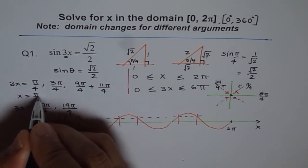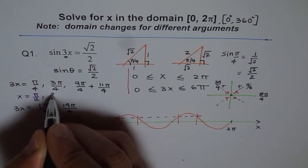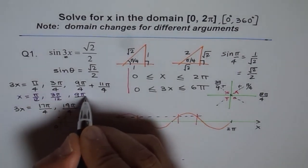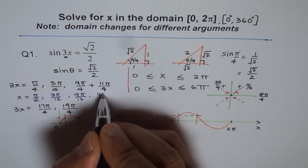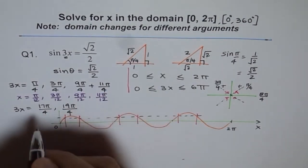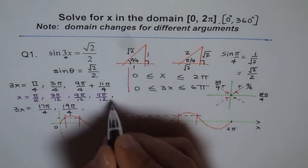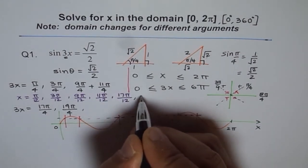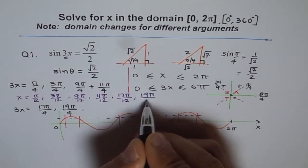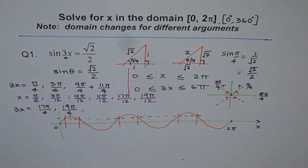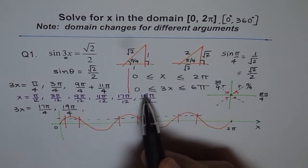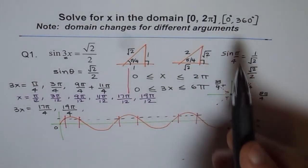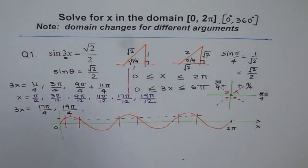So what is the value of x? The value of x is one third of these. So x is π by 12, 3π by 12, 9π by 12, 11π by 12, and for these we get 17π by 12 and 19π by 12. Do you see that? Still, 19π by 12 is less than 2π. Do you get the point? So you get all your answers within x equals 0 to 2π.